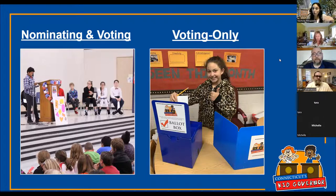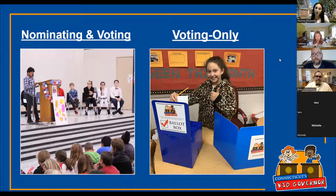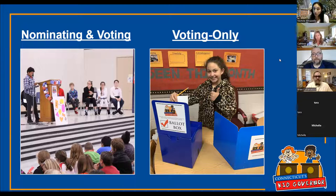The nominating and voting groups get extra lessons covering things like how to decide on a platform, do good research, develop a three-point plan, and create a video. All of these lesson plans can be found on the Connecticut's Kid Governor website as well as our Google Shared Drive, which has other resources beyond just the lesson plans themselves.